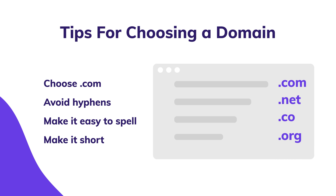So let's talk a little bit about domain names. On the right side, you can see the most popular top level domain names — TLDs — or basically just the ending of your website. The most popular one is .com, followed by .net, .co, .org, and so on. There are plenty of them, but these are the most popular ones.